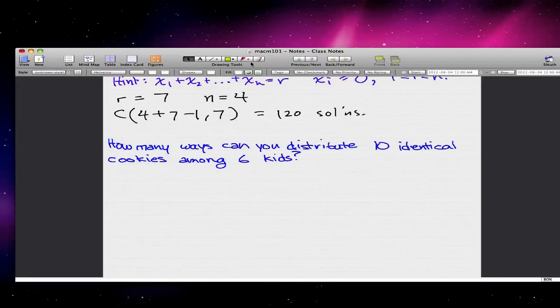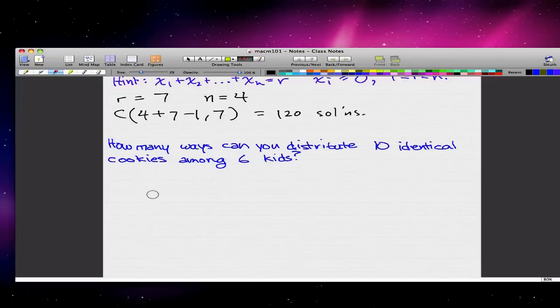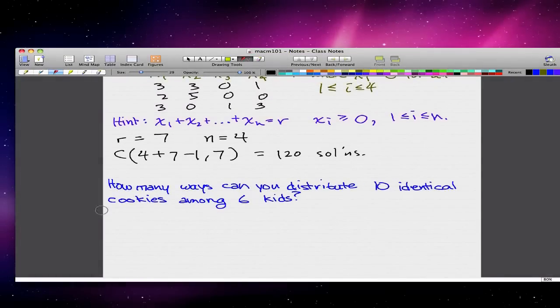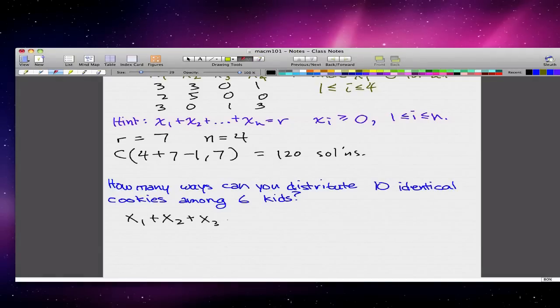So how many ways can you distribute 10 identical cookies among 6 kids? Again, this one is very simple. All you have to do is, you have 6 kids, right? So these kids, we're assuming that they're distinct and they have different faces. So x1, x2, x3, x4, x5, and x6.